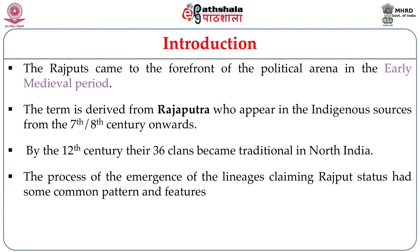The 36 clans of the Rajputs are mentioned in early medieval texts like the Rajatarangini of Kalhan, the Kumarapalacharita, the Prithvirajarasa, and the Aparajita Pritchha. When we study the composition of this list, we find it comprised a mixed group — it was not at all homogeneous. The process of the emergence of lineages claiming Rajput status had some common patterns and features.